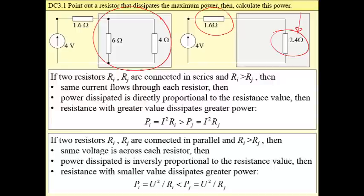If two resistors are connected in parallel like here, then we have the same voltage across each resistor. Power dissipated is inversely proportional to the resistance value, and the resistance with the smaller value dissipates greater power.